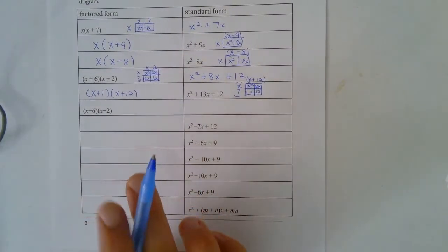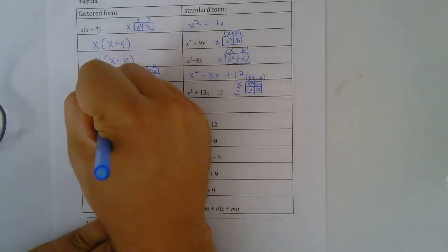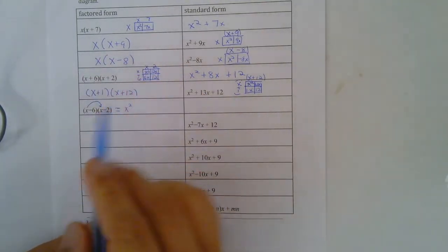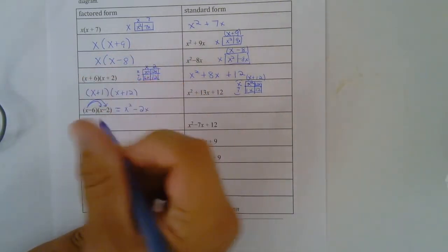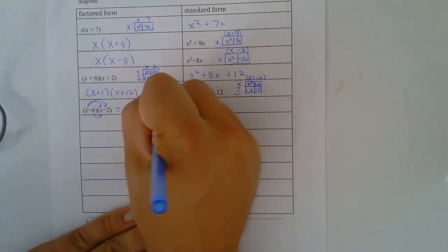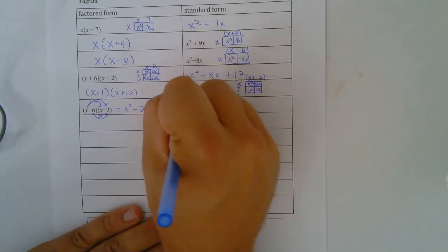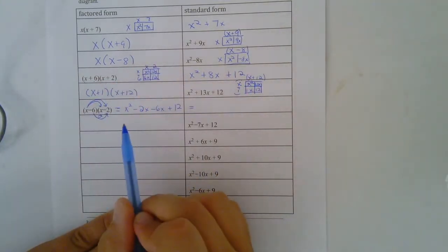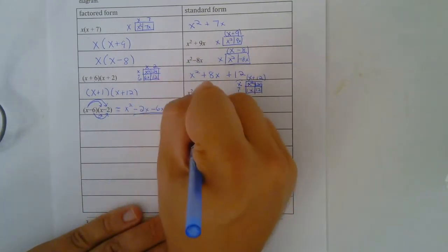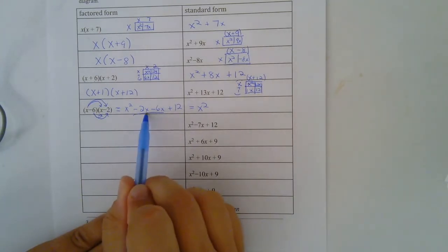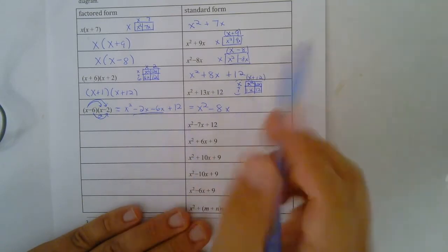Similarly, we're going to do this with just distribution. If I go x times x that's x squared. x times negative 2 would be minus 2x. Negative 6 times x would be minus 6x. Negative 6 times negative 2 would be plus 12. Combining our like terms: we have x squared, negative 2x minus 6x would be minus 8x, and then plus 12.